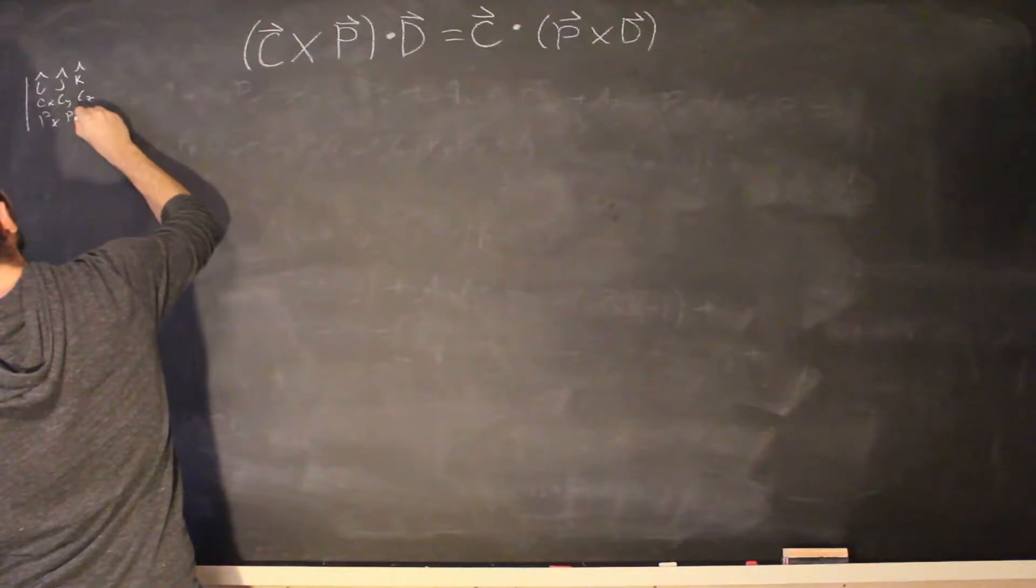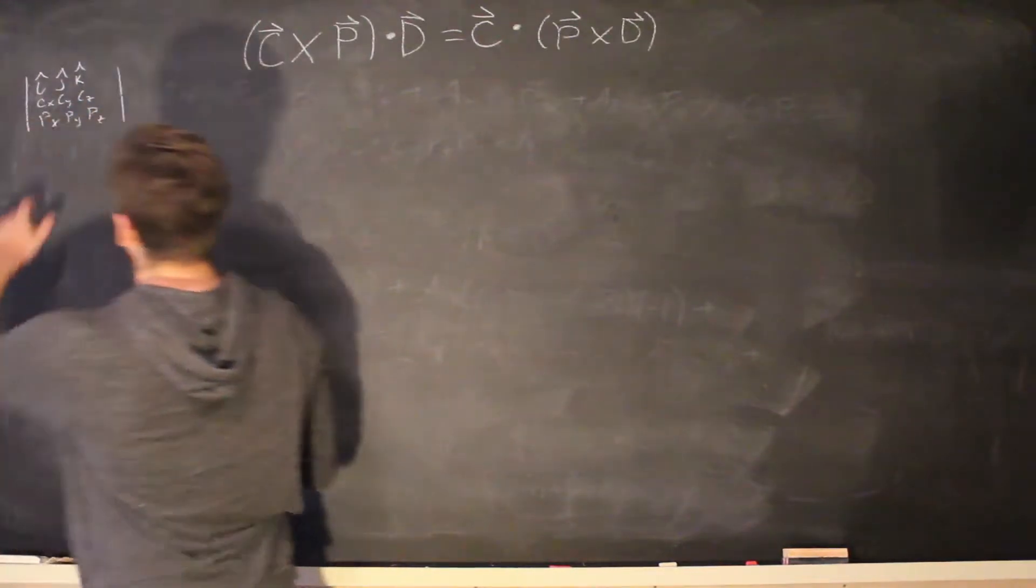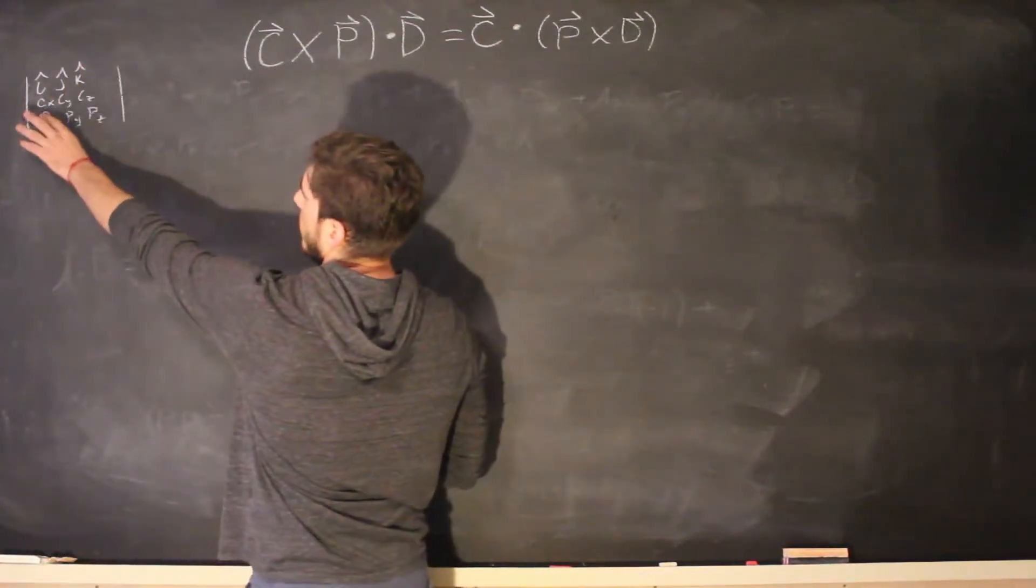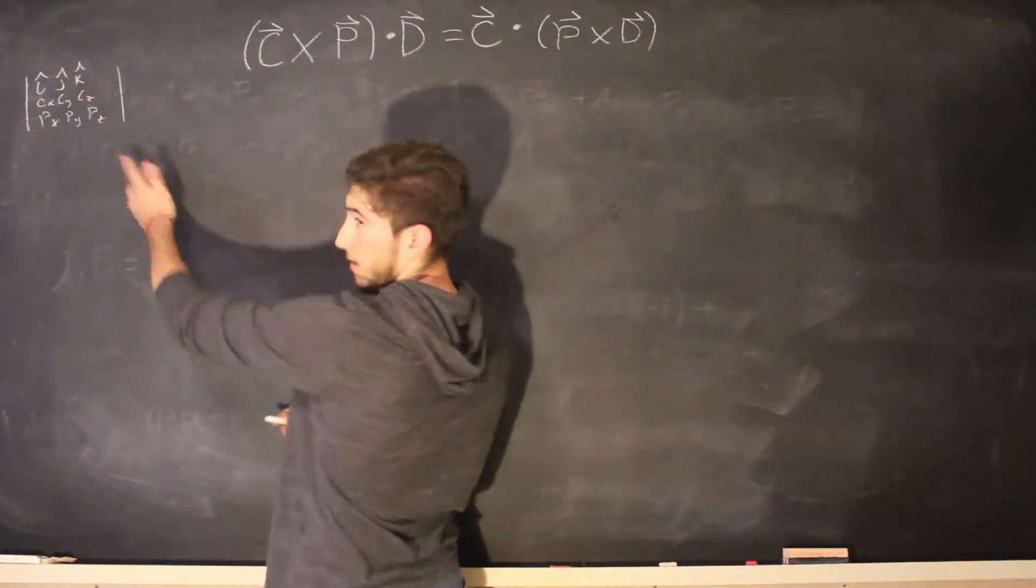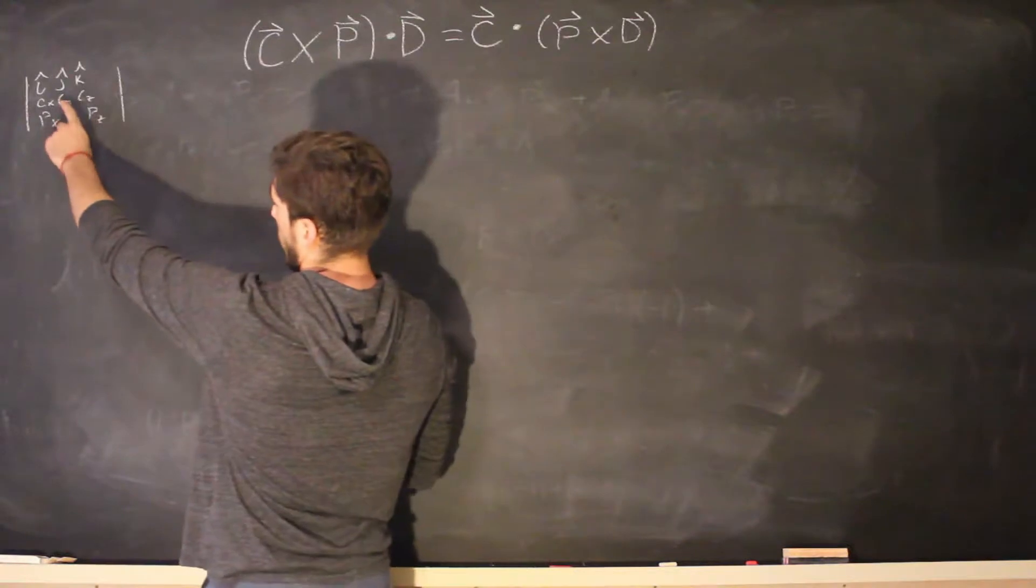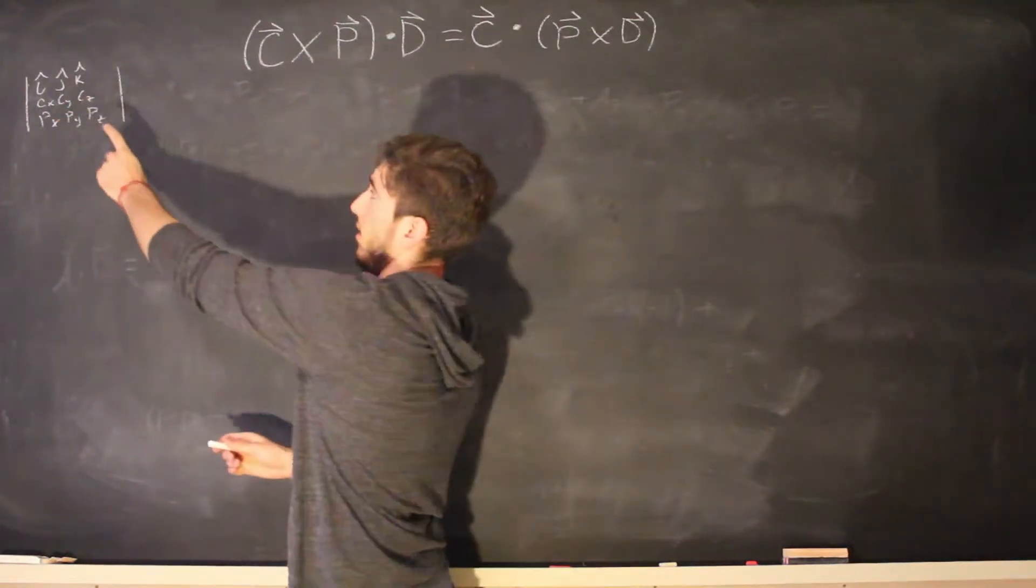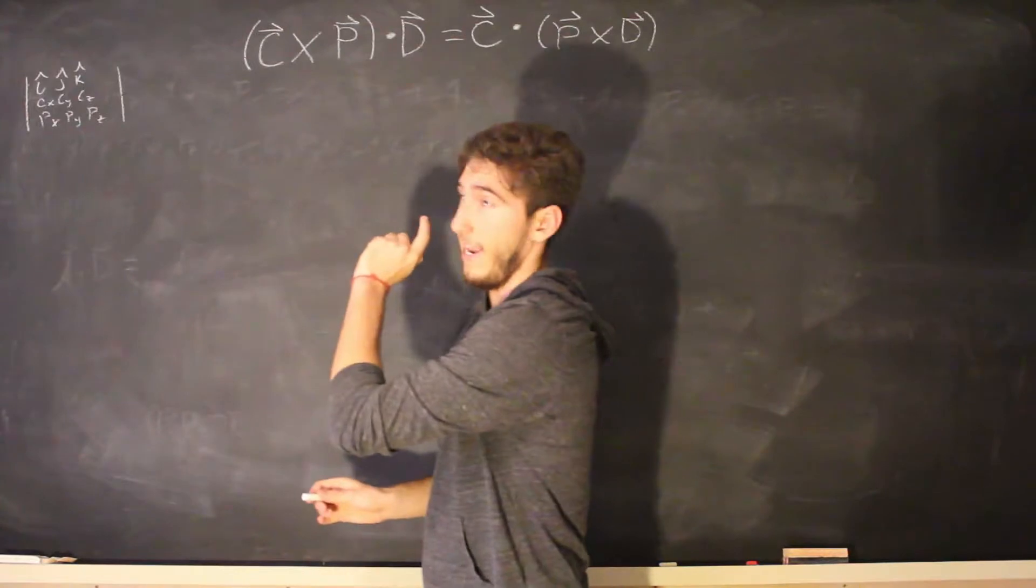P x, P y, P z. So I have my matrix, I, J and K, C of X, C of Y, C of Z, P of X, P of Y, P of Z. Keep in mind that when we actually apply the J hat it will be negative.